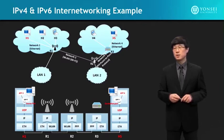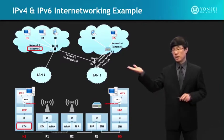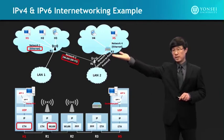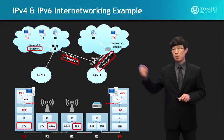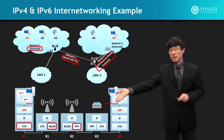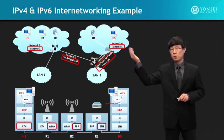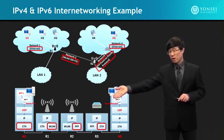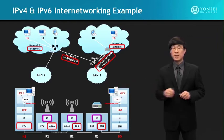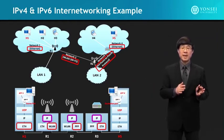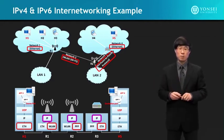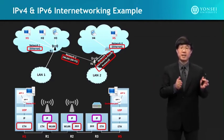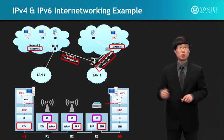For example, in this network there is an Ethernet network way over there, connected to a Wi-Fi network in the middle, and also a point-to-point protocol connected to the Ethernet network. Going through routers 1, 2, and 3, the IP layer is what makes these different networks transferable, such that an IP packet can be routed to reach the intended destination.